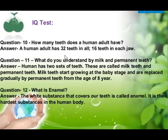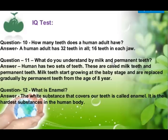How many teeth does an adult have? A human adult has 32 teeth in all — 16 in the upper jaw and 16 in the lower jaw.